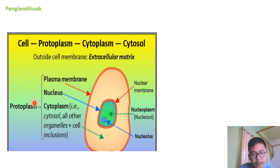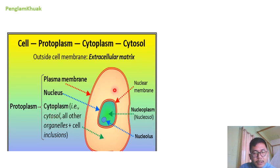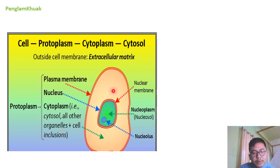So when we talk about protoplasm, it will include the plasma membrane, nucleus, and cytoplasm — that is the cell cytosol, the fluid substance which is present inside the cells, or below the plasma membrane — and all other organelles such as endoplasmic reticulum, Golgi bodies, mitochondria, etc. They are called cell organelles plus cell inclusions.